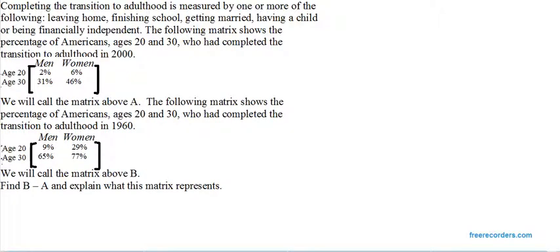It asks us to find the matrix B minus A. Since they're both 2 by 2 matrices, we can subtract them. The way we get the number that goes in row 1, column 1 is we take the entry from matrix B, the entry from matrix A, and we subtract them. 9% minus 2% is 7%.